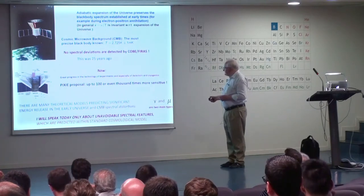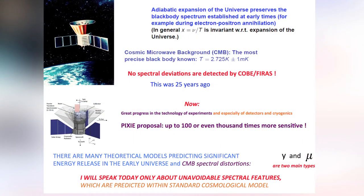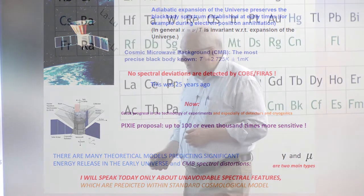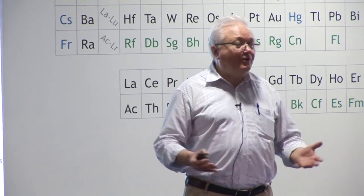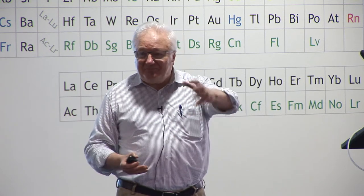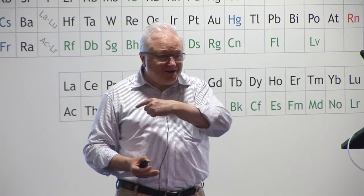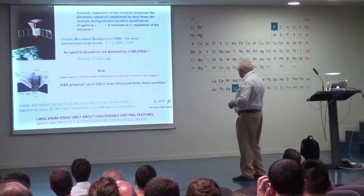Now we have great progress in technology of experiments and especially of detectors and cryogenics. There will be PIXSI proposal to NASA. It will be from 100 to 1,000 times more sensitive. And now there are many theoretical models predicting significant energy release in the early universe and spectral distortions of CMB. Most important, a lot of them are connected with decay or annihilation of unknown types of particles which were existing in early universe and decayed and no traces today. CMB will, if there was significant energy release, remember this.